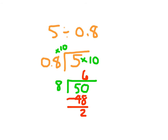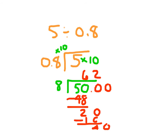So we need to add another place value with a decimal point. We have 20 divided by 8, which is 2. 2 times 8 is 16. 20 minus 16 is 4. Add another 0 to bring down — 40 divided by 8 is 5. At this point I have two decimal places in the work, so I will have two decimal places in my answer as well. So the answer is 6.25.